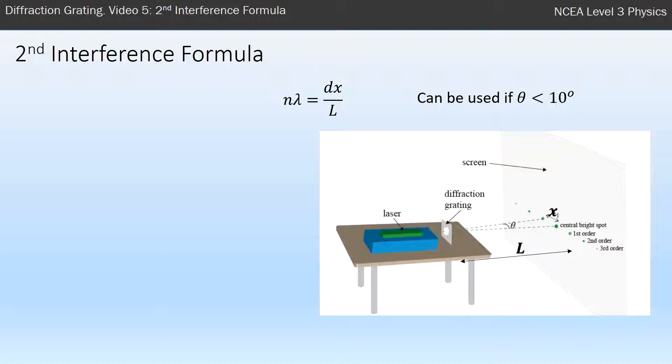We're going to look at the second formula we can use for these interference patterns. In the last video, we used n lambda equals d sine theta. There's another formula you'll see in your formula sheet, which is n lambda equals dx over L. When can you use this? The short answer is you can use this if the angle between the central bright spot and the first bright spot is relatively small - a rule of thumb is less than 10 degrees.